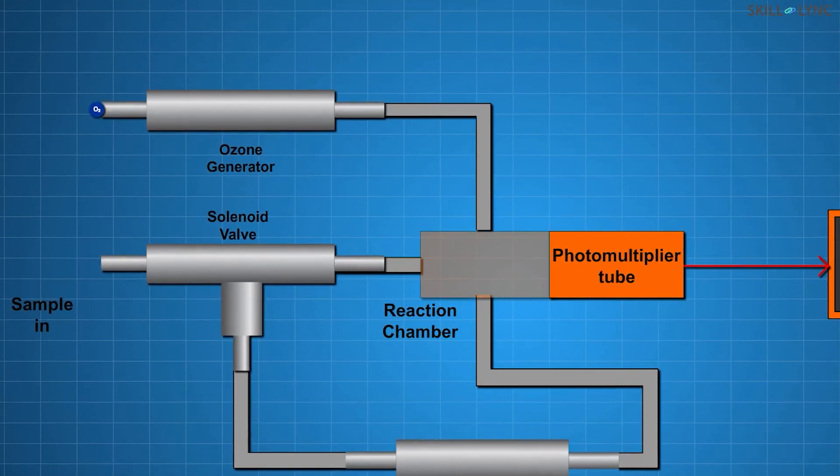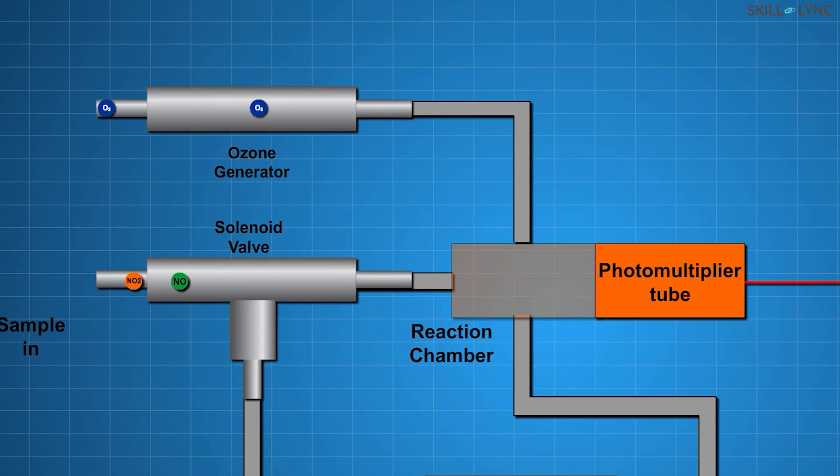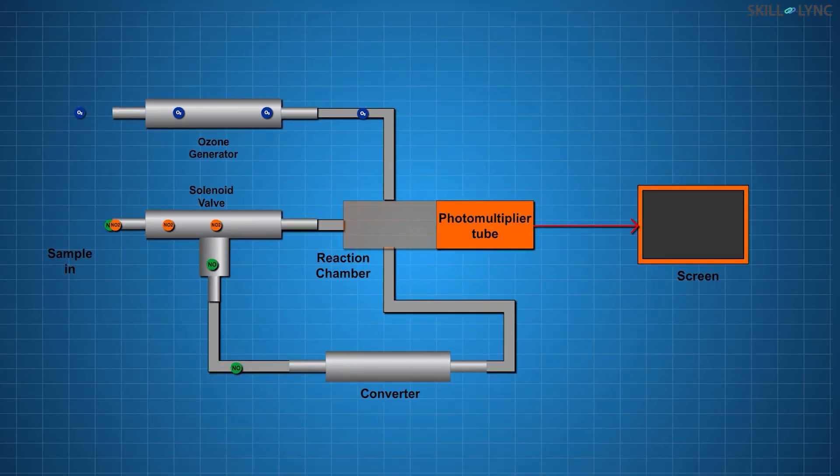Now, let us see how this works. Air is let inside the ozone generator and high voltage is supplied to it. Thus, ozone is generated. At the same time, a sample of the exhaust gas to be tested is let inside the converter. The converter converts all the oxides of nitrogen into NO.